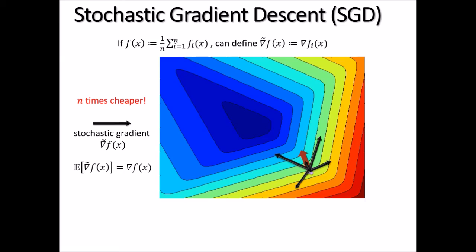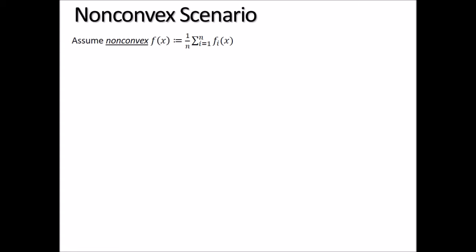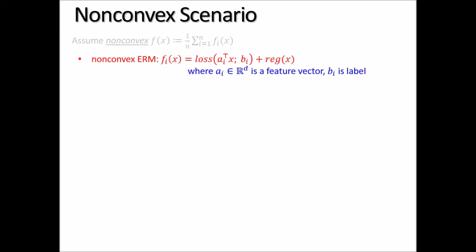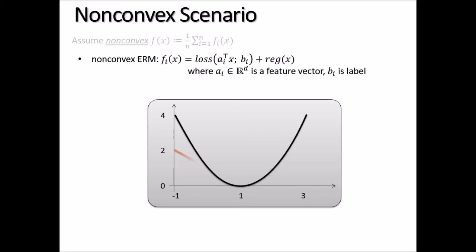The whole function f(x) and each individual fi could be non-convex. As applications, non-convex empirical risk minimization goes into this category: whenever the loss function is non-convex, such as zero-one loss or sigmoid loss, the classification problem becomes a non-convex ERM model. Non-convex loss functions are actually more preferable in practice in terms of generalization error, making this problem even more interesting than convex ERM models.